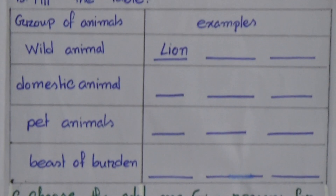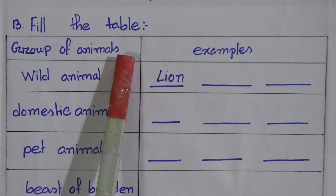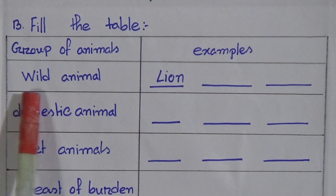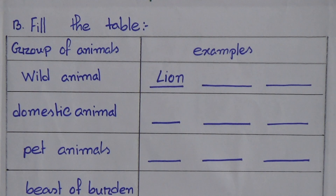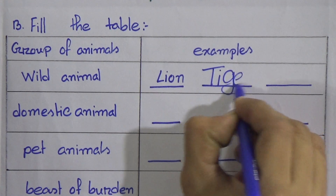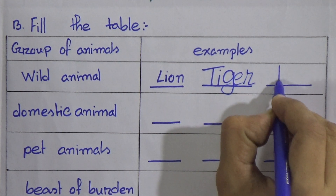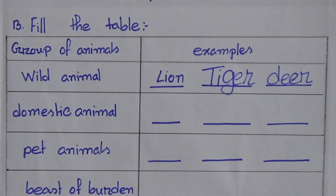Here there is a box with a group of animals and examples. Wild animals — we know that animals who live in the forest are called wild animals. Wild animals are basically lion, tiger, and deer.